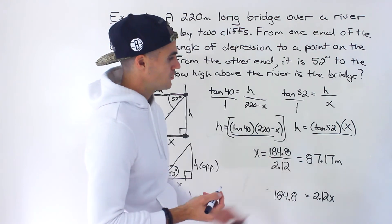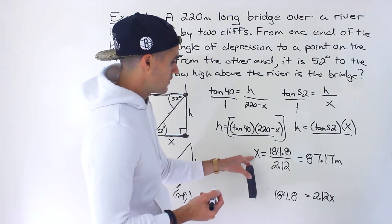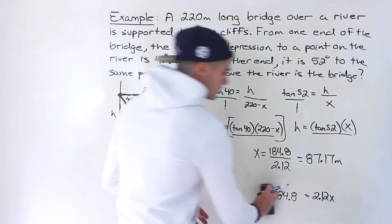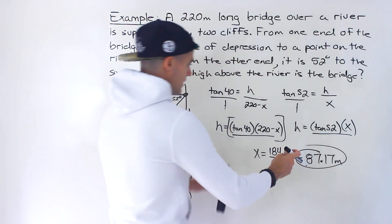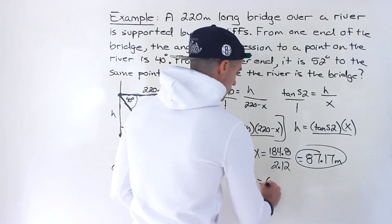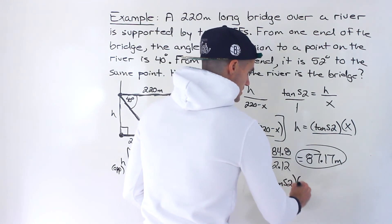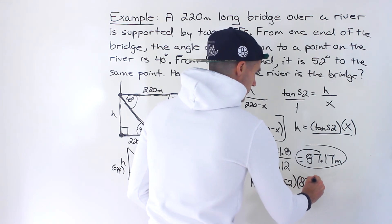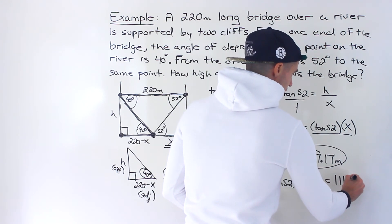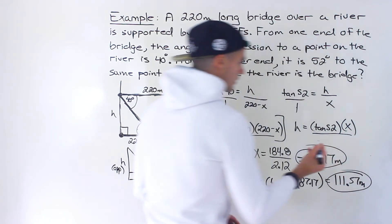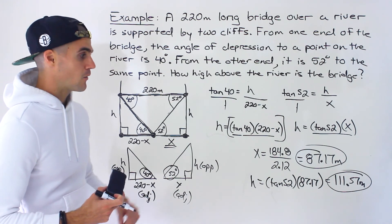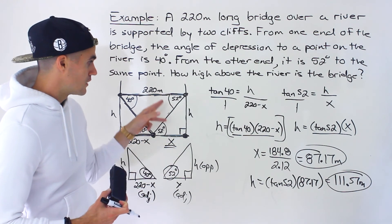That calculation gives X ≈ 87.17 meters — that's this base distance. Plugging this X value into the simpler equation: H = tan(52°) × 87.17 ≈ 1.28 × 87.17 ≈ 111.57 meters. That's the H value — how high above the river the bridge is. So that's the final answer.